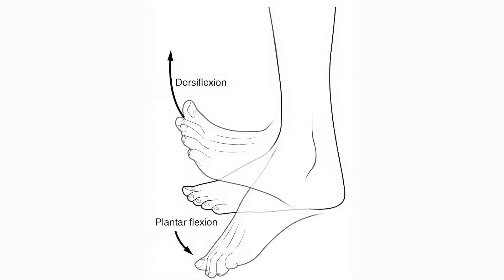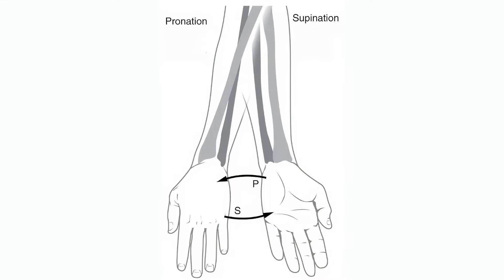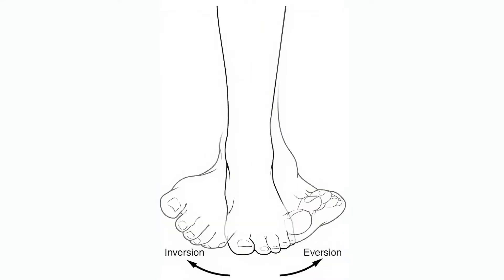For instance, dorsiflexion and plantarflexion refer to extension or flexion of the foot at the ankle joint. Another example is pronation and supination, which refer generally to the prone (facing down) or supine (facing up) positions. Finally, we also have inversion and eversion, which refer to movements that tilt the sole of the foot away from or towards the midline of the body respectively.